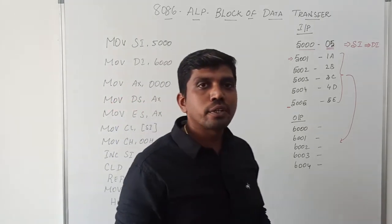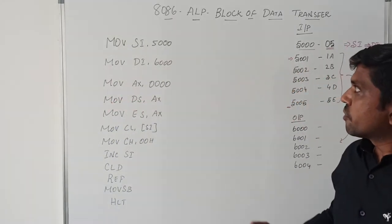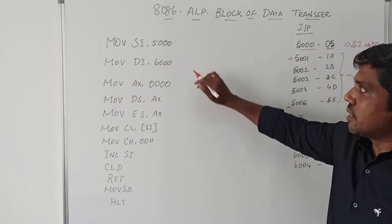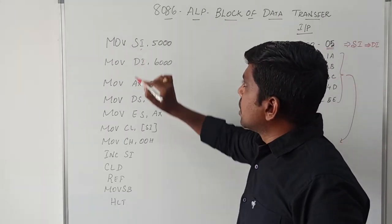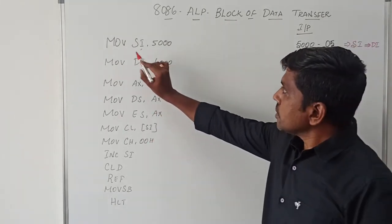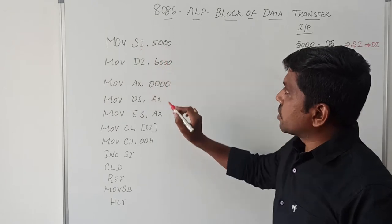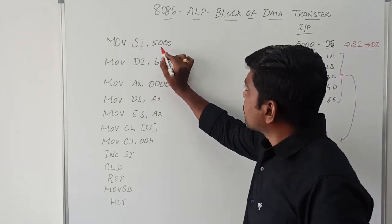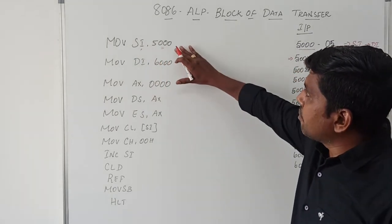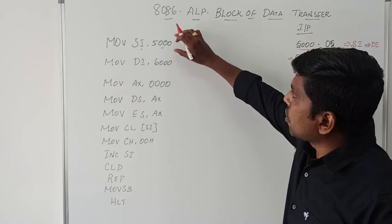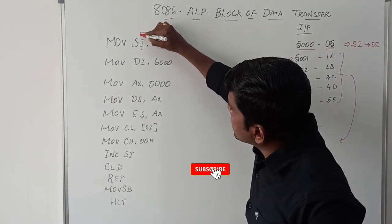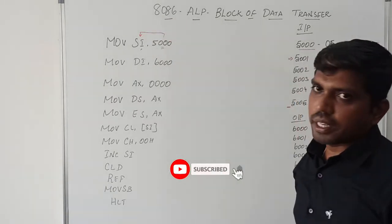Now I am going to explain the sequence of the program. First, initialize the SI register — SI represents the source index register. The instruction MOV SI, 5000H loads the immediate 16-bit value 5000H into SI. After execution of this instruction, SI holds the value 5000H.